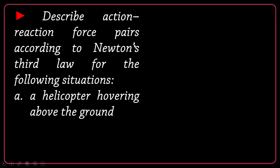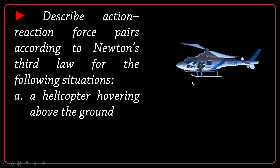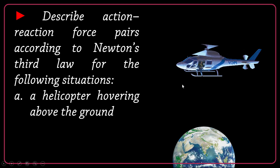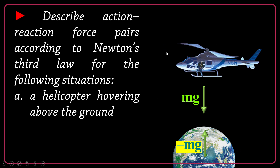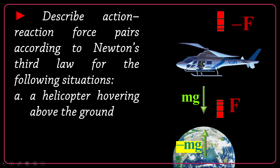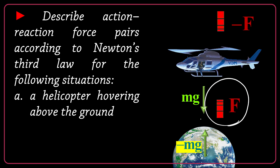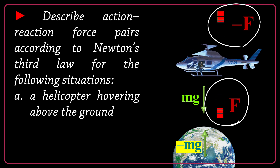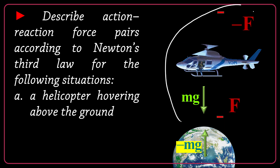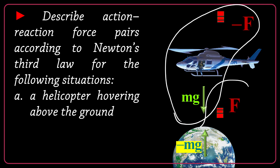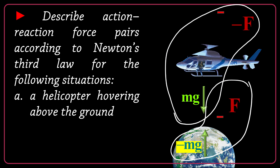Describe action and reaction force pairs for a helicopter hovering above the ground. When the helicopter is hovering, it's almost at rest. First, consider mg and negative mg. The other pair involves the thrust force generated by the rotation of blades — the blades push the air downward with force F. This is the action, and negative F is the reaction acted on the helicopter. Here mg and negative F cancel each other, so the helicopter is at rest, and F and negative mg cancel each other, so the earth is at rest.